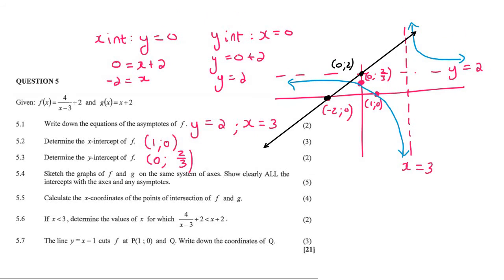Question 5.5. Calculate the coordinates of the points of intersection. Whenever they ask you where two graphs intersect, which is these places over here and over here, so we should expect two answers. What you do is you make the two equations equal to each other because they are going into each other. So you say 4 over x minus 3 plus 2 equals x plus 2. There's multiple ways you could carry on from here, but I'm going to first simplify it as much as possible. So I'm going to take the 2 over. So you're going to end up with plus 2 minus 2, and those are going to cancel.